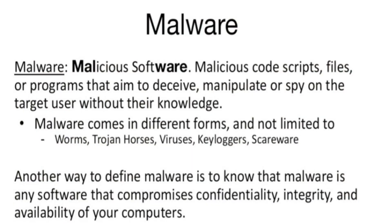Let's start off with the definition of malware. Malware — malicious software — refers to malicious code, scripts, files, or programs that aim to deceive, manipulate, or spy on the target user without their knowledge. Malware comes in different forms, including worms, Trojan horses, viruses, keyloggers, and scareware. Another way to define malware is any software that compromises confidentiality, integrity, and availability of your computer.